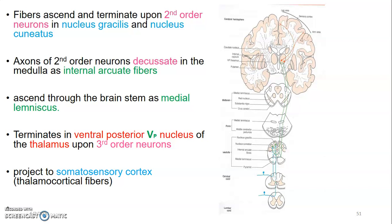The axons of second-order neurons immediately decussate in the medulla after synapsing with the first-order neuron, crossing as internal arcuate fibers. They then ascend through the brainstem — from the medulla to the pons to the midbrain — as the medial lemniscus. This tract terminates at the ventral posterior nucleus of the thalamus on a third-order neuron, which later projects to the somatosensory cortex as thalamocortical fibers.